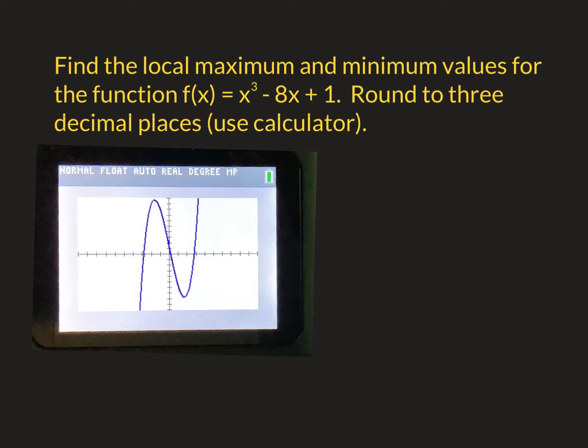Okay, heads up. This slide is going to be a little bit different because I'm just going to talk to you some calculator steps. This one says, find the local max and local min values for the function f of x is x cubed minus 8x plus 1. Round to three decimal places. Use a calculator, which I can't really show you.